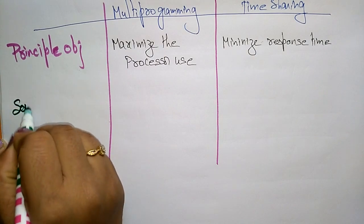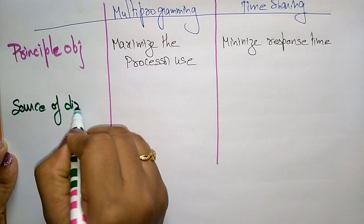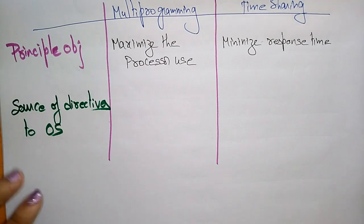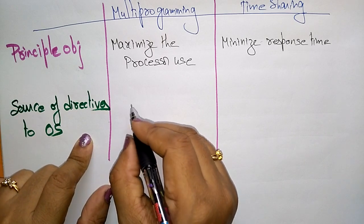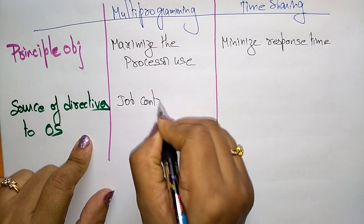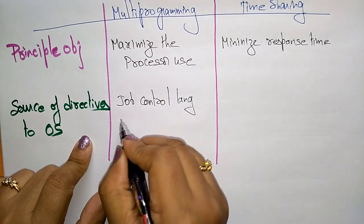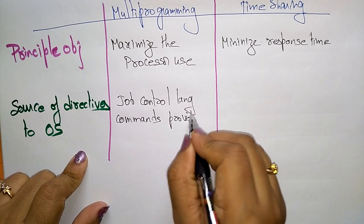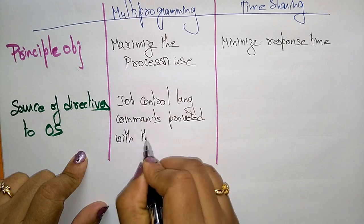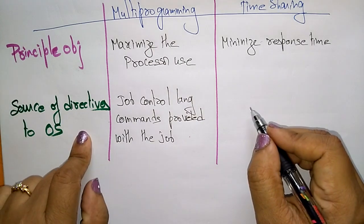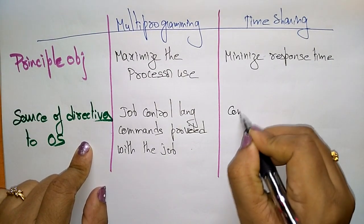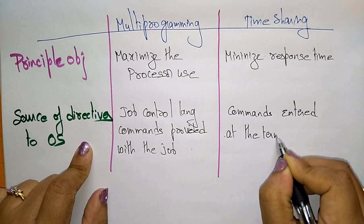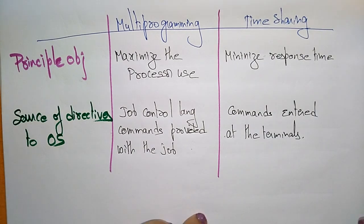Now coming to the sources of directives to the operating system. For multi-programming, the source of directives to the operating system is job control language commands provided with the job. Whereas in a time sharing system, the source of directives to the operating system is commands entered at the terminals. This is the main difference between the multi-programming batch system and the time sharing system.